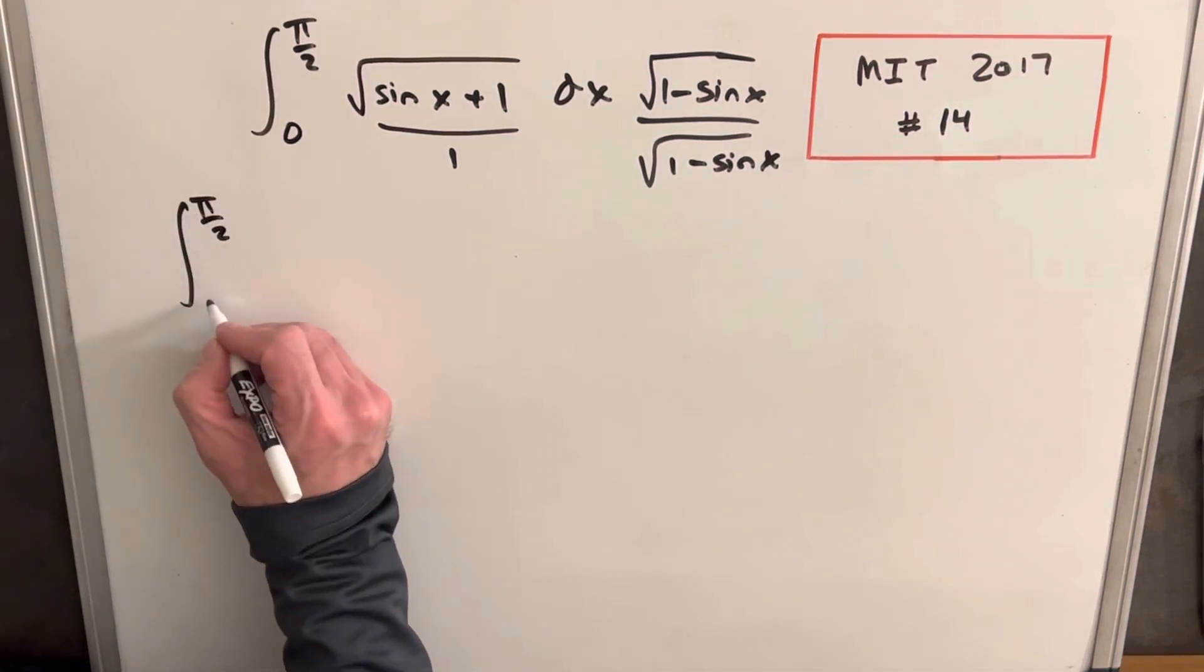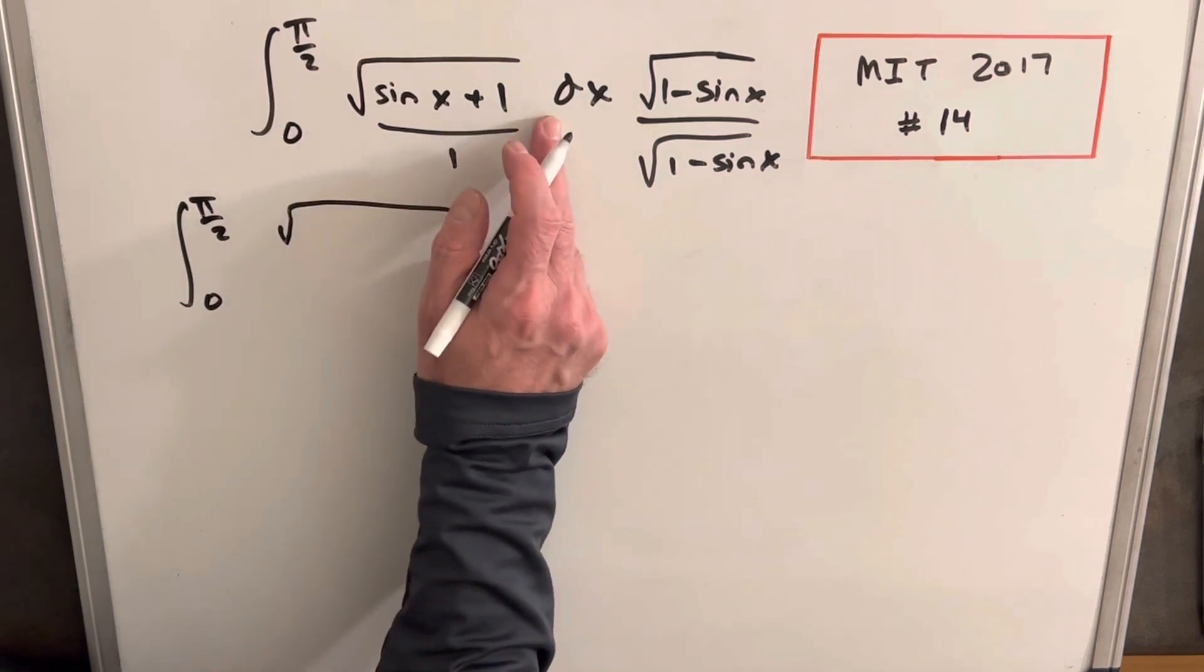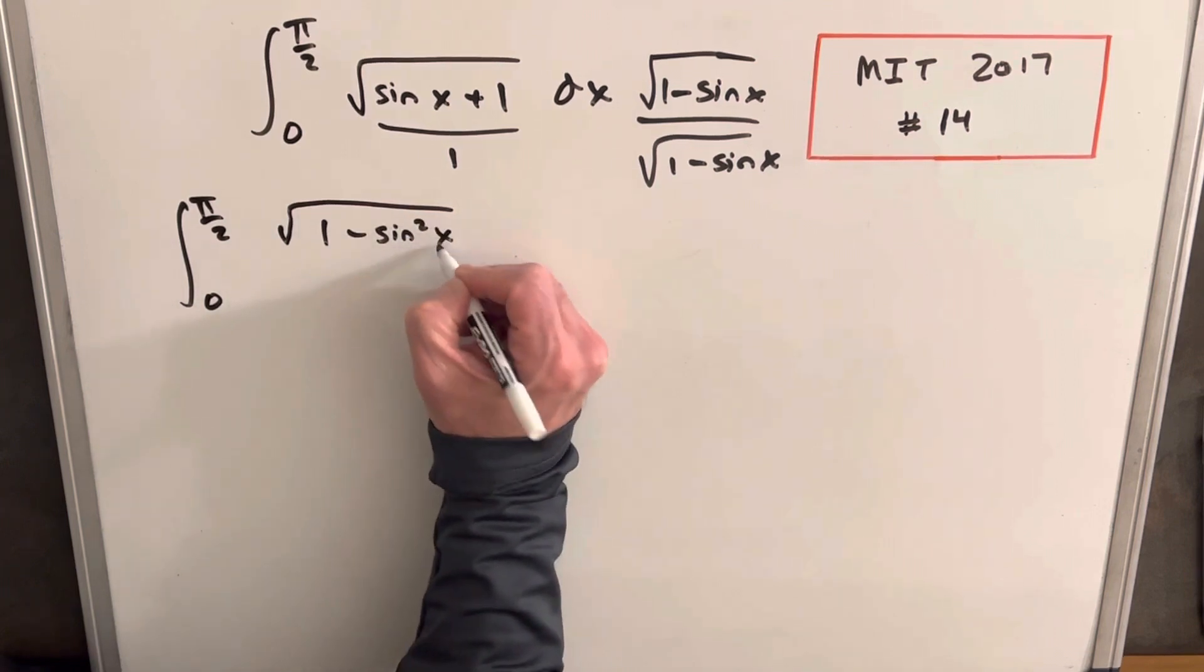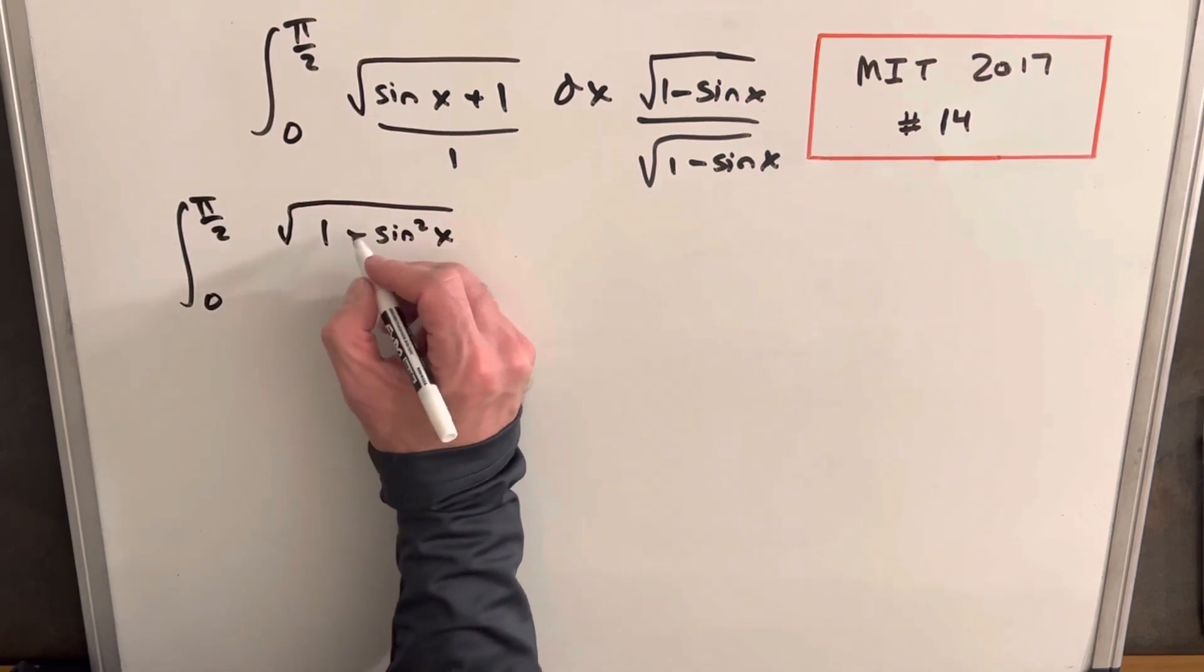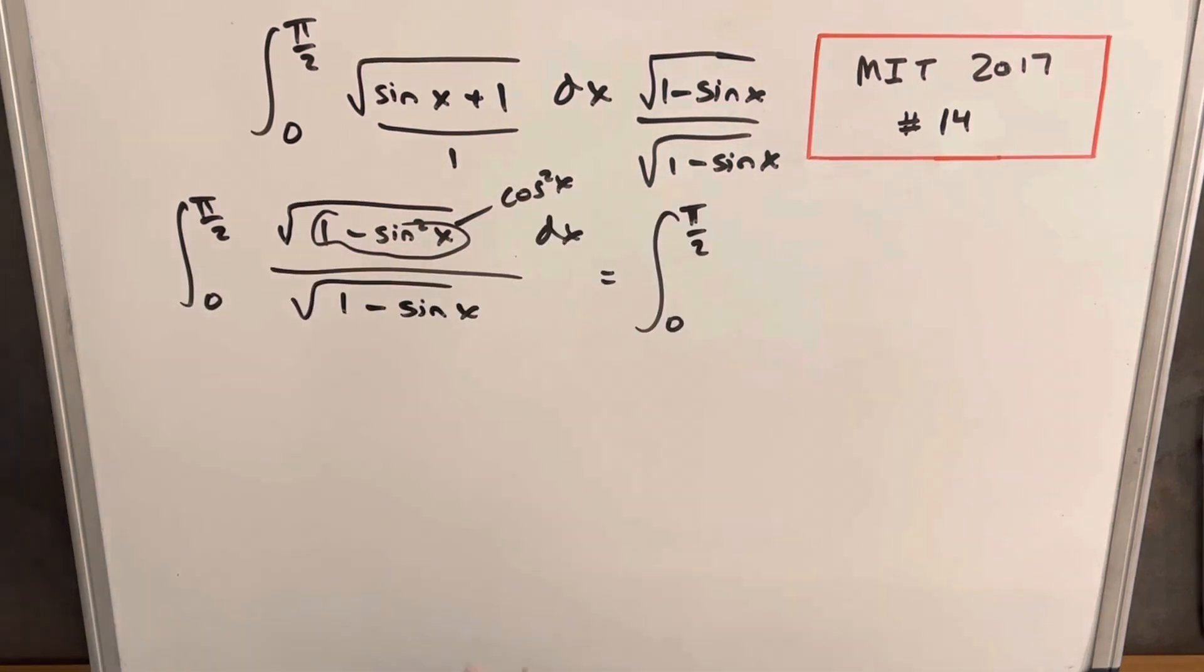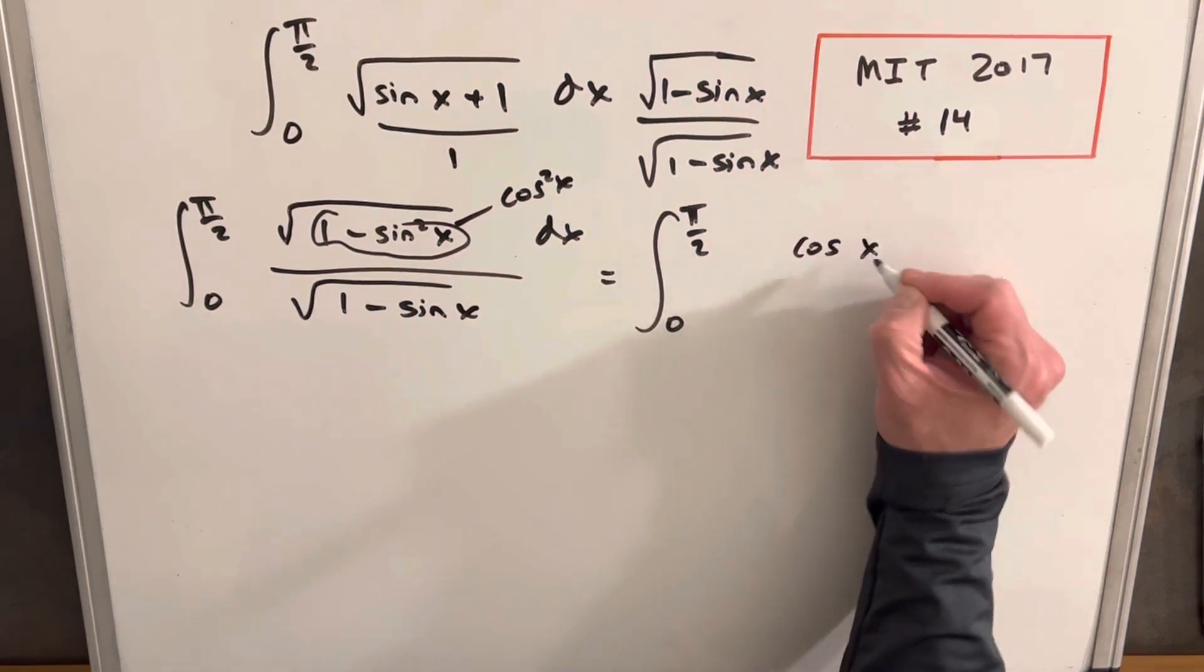So we're integrating from pi over 2 to 0. Then inside this square root, we're going to have 1 minus sine squared x. And I do that, of course, because that is the same thing as cosine squared x.